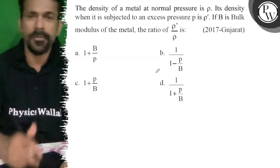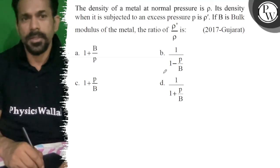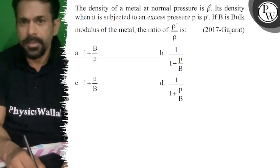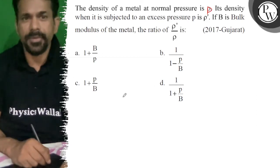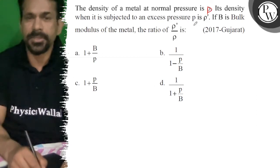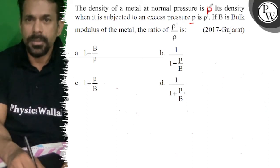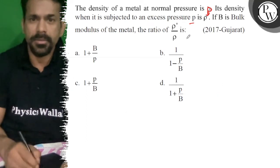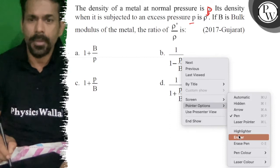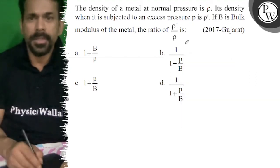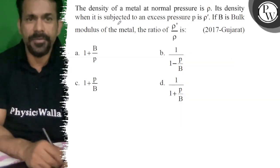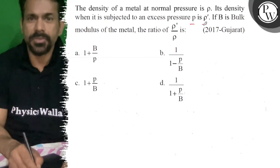Hello, let's see the question. The density of a metal at normal pressure is ρ. Its density when subjected to excess pressure p is ρ'. The problem asks about the density ρ when subjected to excess pressure p, which is ρ dash.